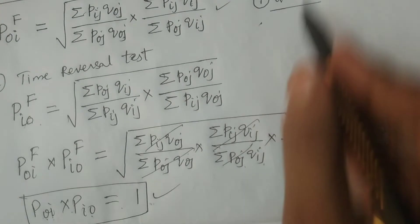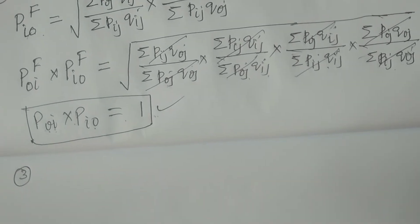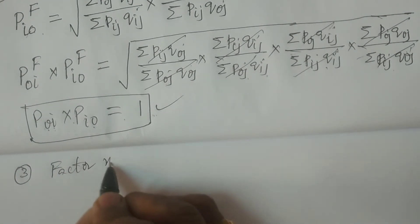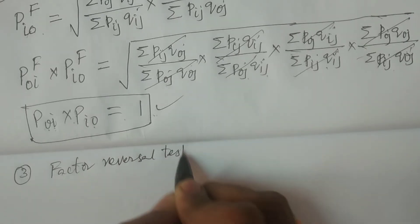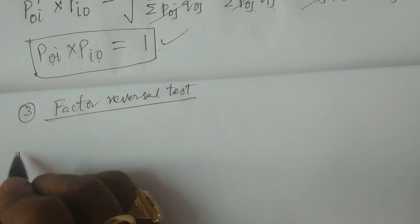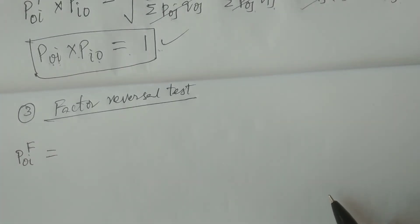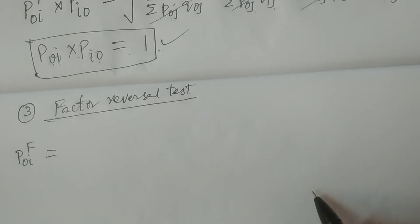Fisher index satisfies the unit test, time reversal test, and now the third one: the factor reversal test. For the factor reversal test, we consider P₀ᵢ, that is the price index number, as well as the quantity index number. If you multiply these two, it should give a consistent true value — that is the factor reversal test.